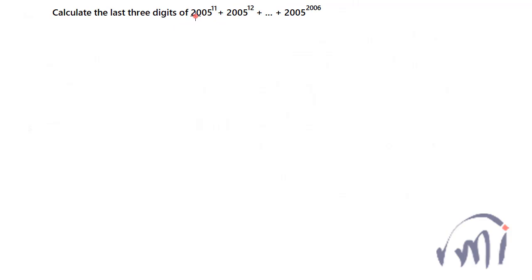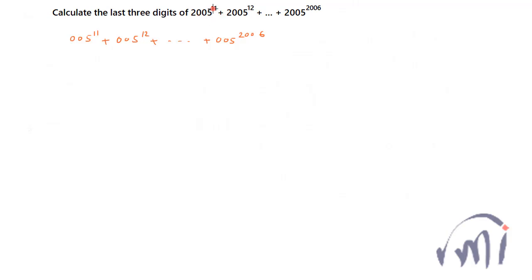When we are talking about last three digits, in each step we will talk only about the last three digits. So this sequence actually gets reduced to 005 to the power 11, plus 005 to the power 12, plus this will continue till 005 to the power 2006. It is practically impossible to calculate these kinds of problems, and the contests in which these kinds of problems are asked usually don't allow calculators. Only the last three digits of each term will contribute to the final last three digits of the result, so in each step I have taken only the last three digits.